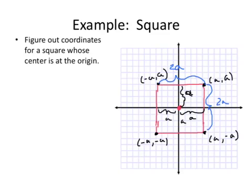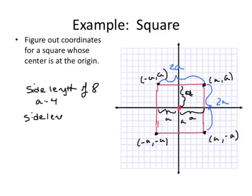If we wanted to find the coordinates for a specific square with a specific side length, say I wanted to find a side length of 8, that means a would have to equal 4. But if my side length was 12, then a would equal 6. So you can take this in a bunch of different directions once you've got your relationships between the points worked out. I hope that makes sense to you guys.